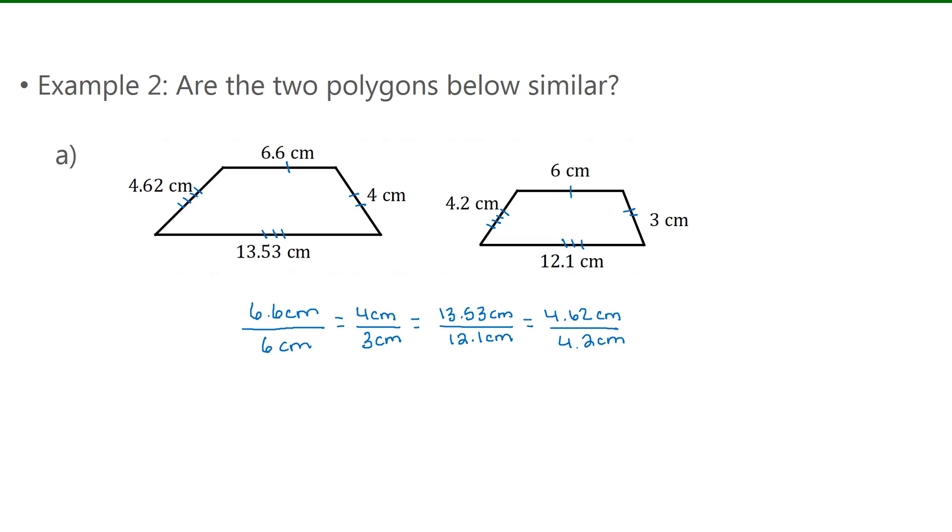So on my calculator, I'm going to put in 6.6 divided by 6. Doing that, I get 1.1. 4 divided by 3 is 1.3 repeating. So right away, I know that the polygons are not similar, since they're not proportional. I'm just going to work out the next two fractions, though. The next one works out to be 1.118, with the 1.8 repeating. So again, that shows they're not proportional. And the last one, I get 1.1. So a couple of the sides are proportional, but not all of them.